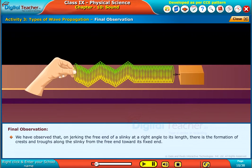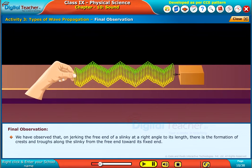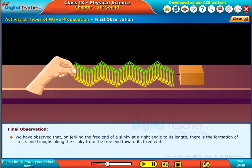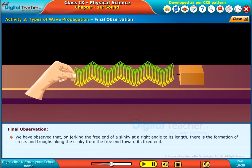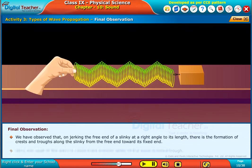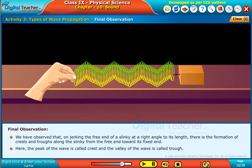We have observed that on jerking the free end of a slinky at a right angle to its length, there is the formation of crests and troughs along the slinky from the free end towards its fixed end. Here, the peak of the wave is called crest and the valley of the wave is called trough.